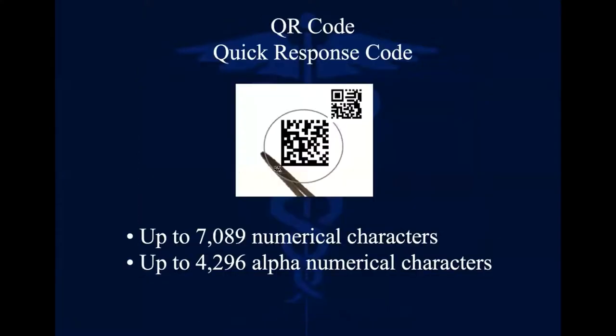So we've moved to the QR code. QR code means Quick Response code, and now we are talking about 7,000 numerical characters — 7,000 characters instead of 13. You can understand that now we can store a lot of information when we are tracking the sterilization and tracking what we are working with in a medical field.